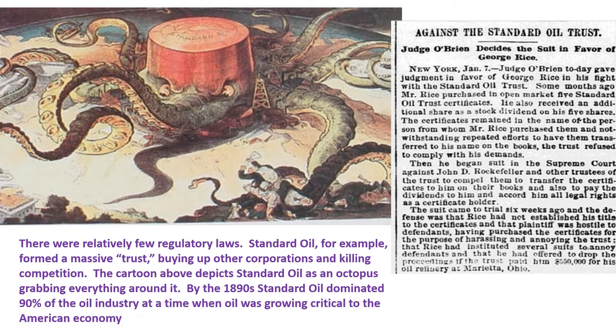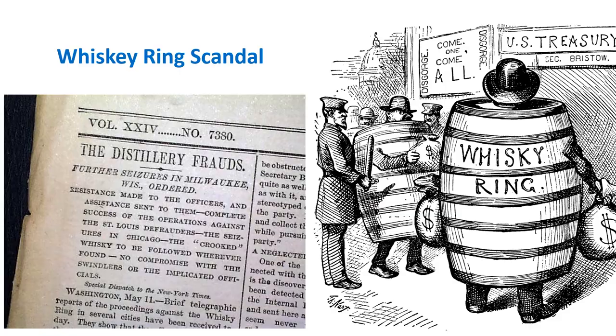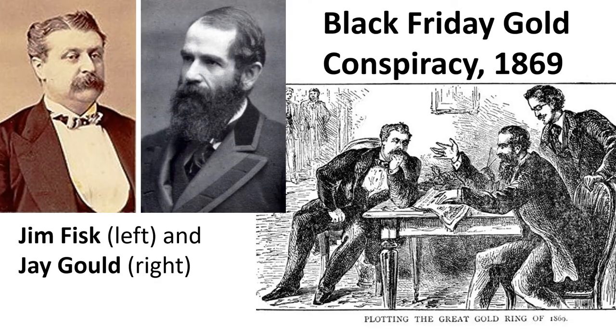By the 1890s, Standard Oil dominated 90% of the oil industry — you've got to understand how critical oil was to the growing Industrial Revolution economy. Without regulation, there was widespread corruption. The late 19th century had a number of famous scandals: the Crédit Mobilier scandal involved the railroad industry, another was the famous whiskey ring scandal in the alcohol industry, and there was the infamous Black Friday gold conspiracy after the Civil War.